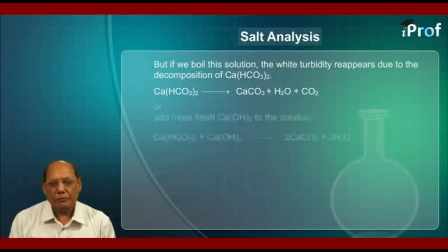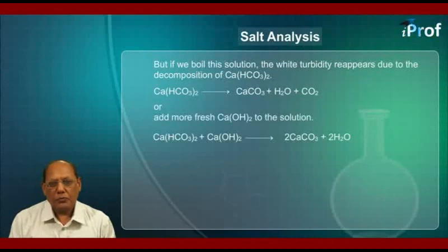Or add more fresh calcium hydroxide to the solution. That is calcium bicarbonate plus calcium hydroxide that combine to give 2 CaCO₃ plus 2 H₂O. CaCO₃, that is calcium carbonate, being insoluble will form white turbidity.